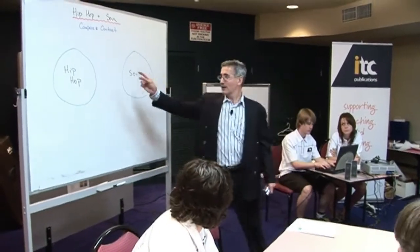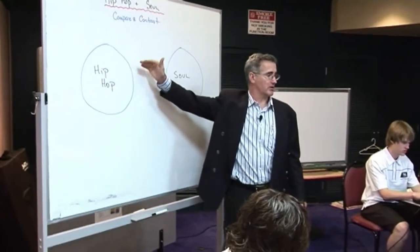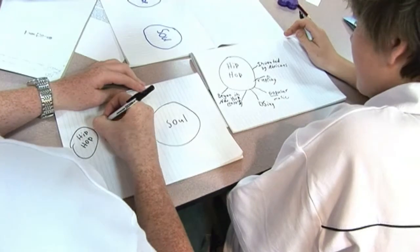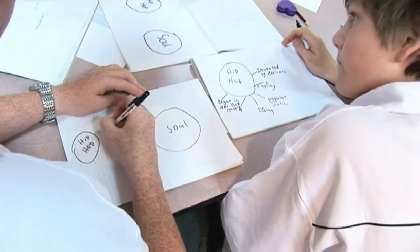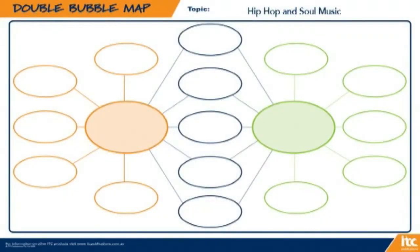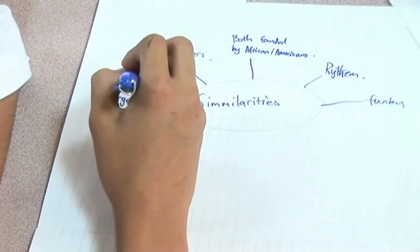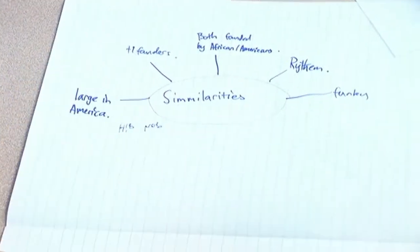Once this is completed, students place the two bubble maps side by side. Students now study their notes of each bubble map and select any points that are identical. For example, these students have noted that both styles of music have a strong US presence, they have African influences, and they are originally Afro-American music styles. At this stage, students should also identify any characteristics that are similar but which use a different wording.